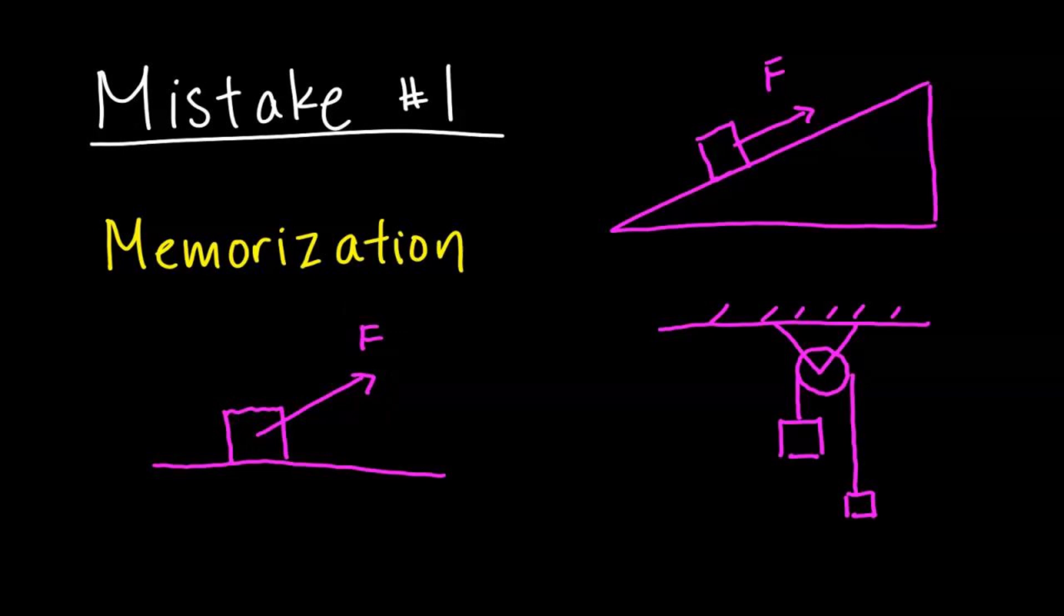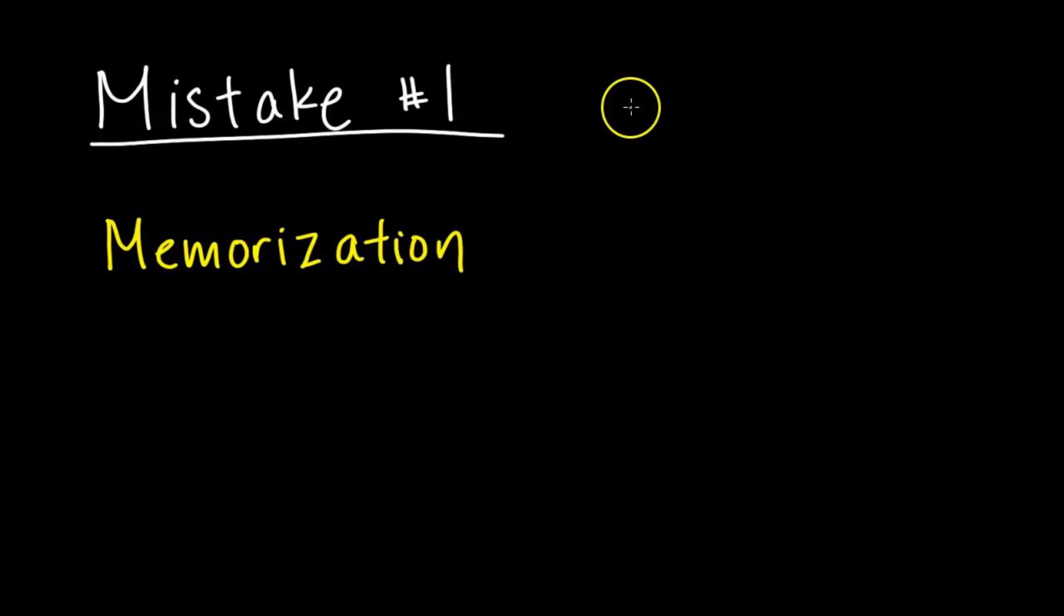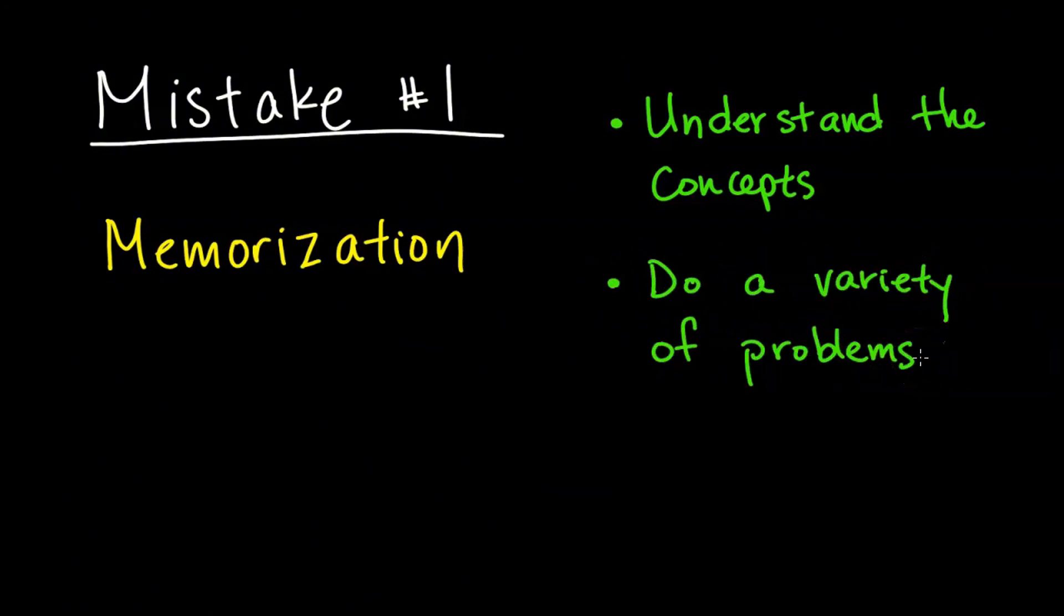The way to avoid this mistake is to know that memorizing is not enough. You still need to work on understanding the concept. Just because you memorized F equals ma doesn't mean you understand the concept. So how do you work on understanding the concept? In the case of F equals ma, I would suggest working on different types of F equals ma problems. So you don't just do one or two F equals ma problems, you do a variety and see how it applies to different situations.